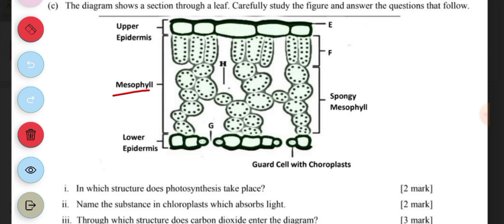The next question says: through which structure does carbon dioxide enter the diagram? Through the stomata. Now take note that the plural for stomata is stoma. That's the entry point through which carbon dioxide enters the leaf.